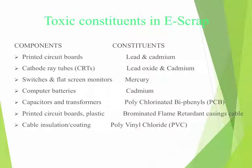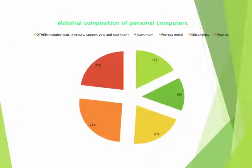Toxic constituents in E-Scrap. The material composition of personal computers includes 17% lead, mercury, zinc, and cadmium; 14% aluminum; 20% ferrous metals; 26% silica or glass; and 23% plastics.